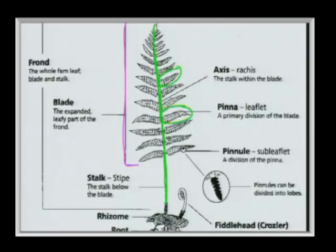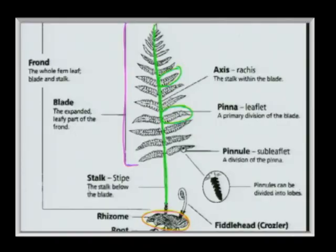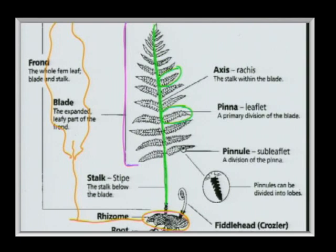The rhizome is basically the underground stem of the fern. Last but not least in terms of plant anatomy, you find roots at the bottom. So the fern has leaves, a stem (the underground rhizome), and roots.